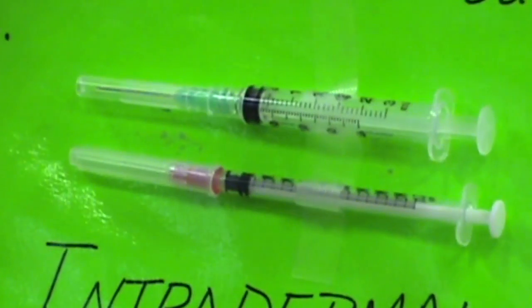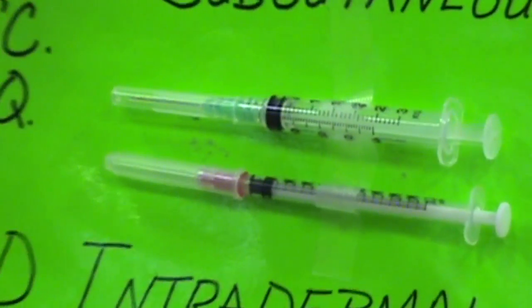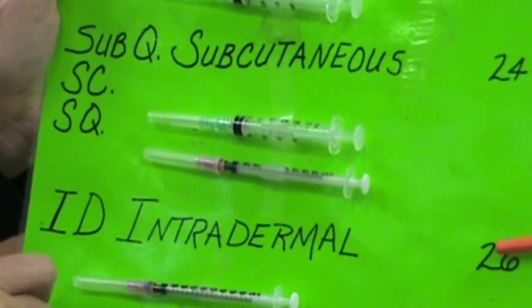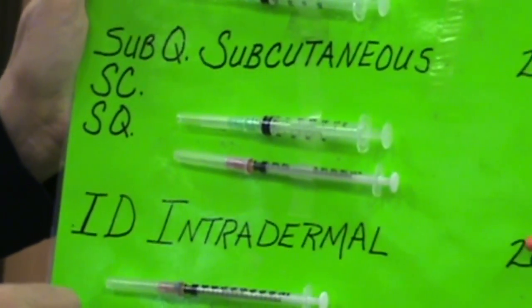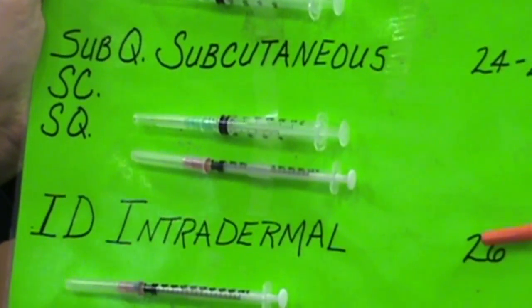The smaller one can be used maybe for some allergy testing. When you do subcutaneous, you're going to go in at a 90 degree angle for a very short needle, or a 45 degree angle for a longer needle.